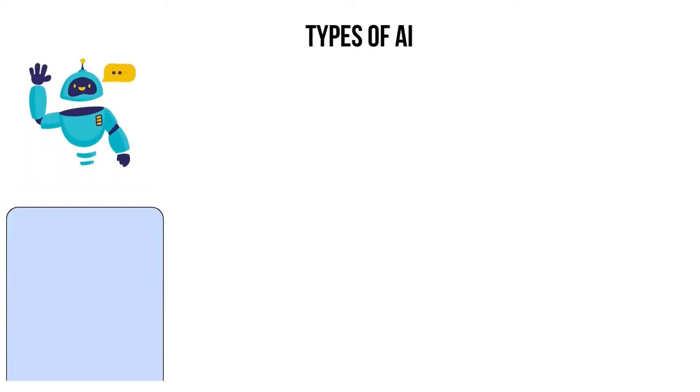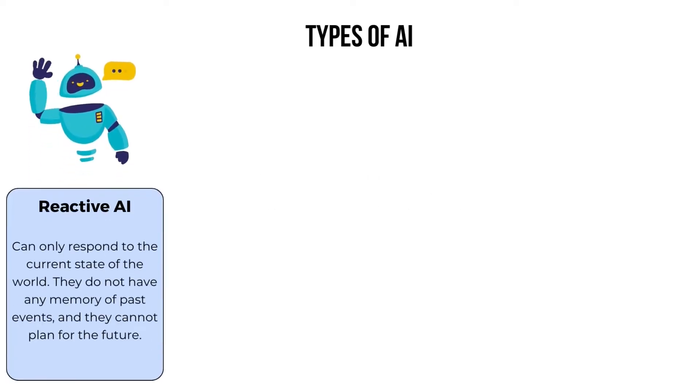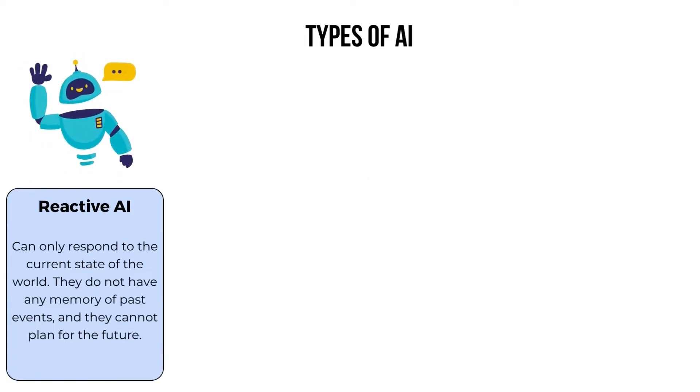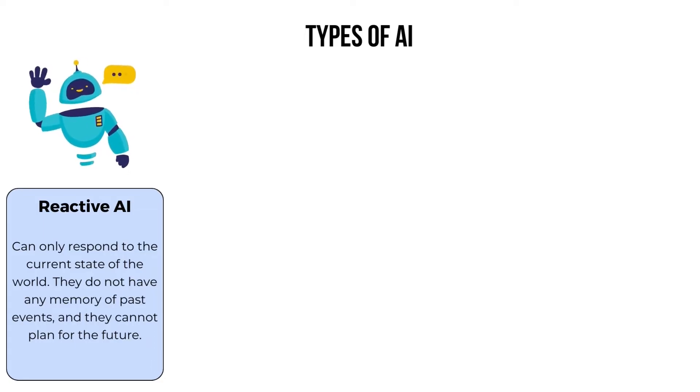There are many different types of AI, but they can be broadly classified into four different categories. The first one is reactive AI.